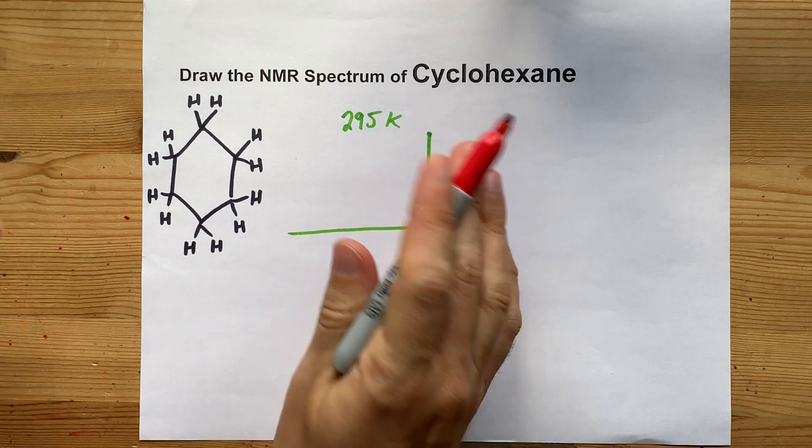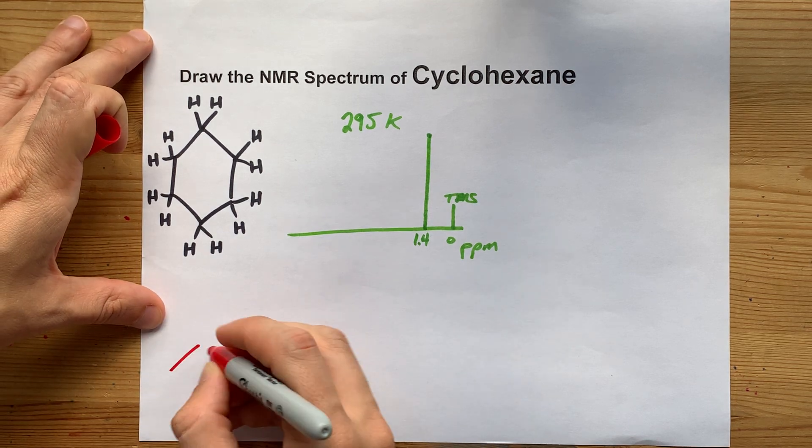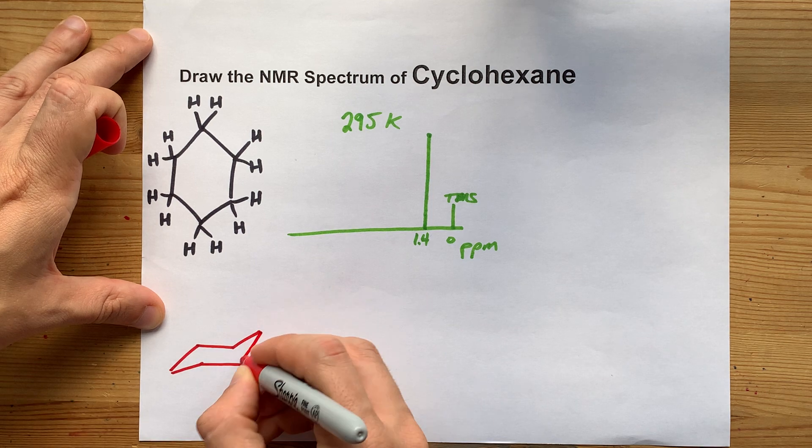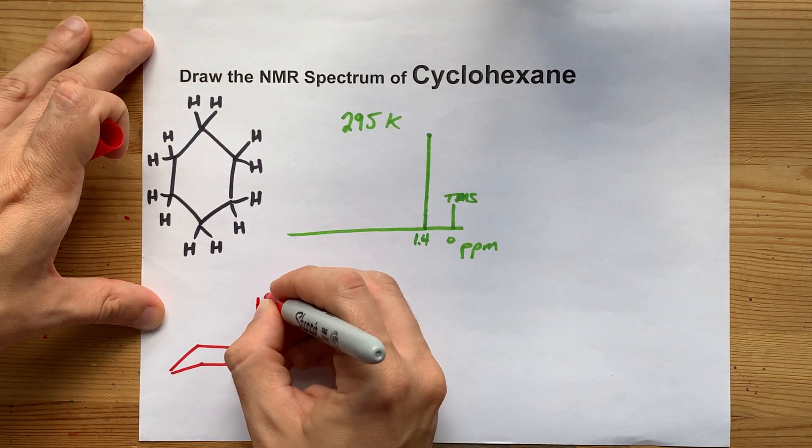The only thing you might be thinking of is the conformers of this. If you've done any organic chemistry at all, you probably know that there are different conformations or ways that this ring can bend.